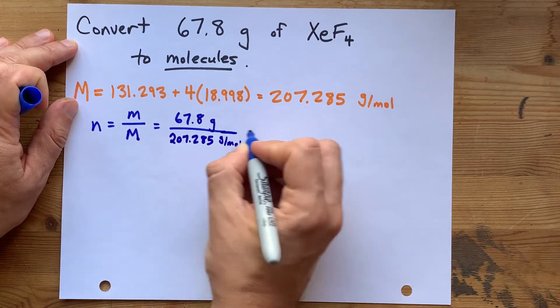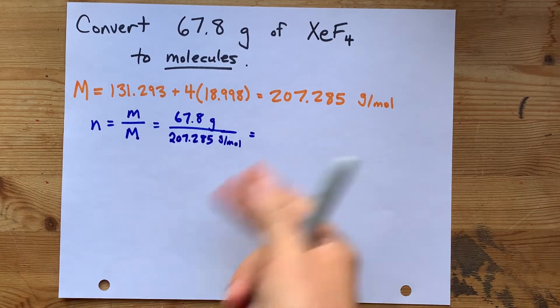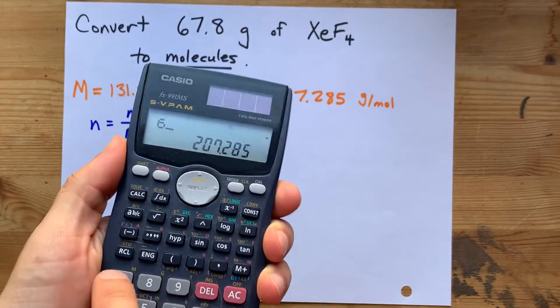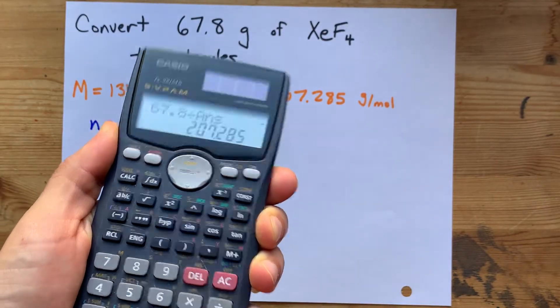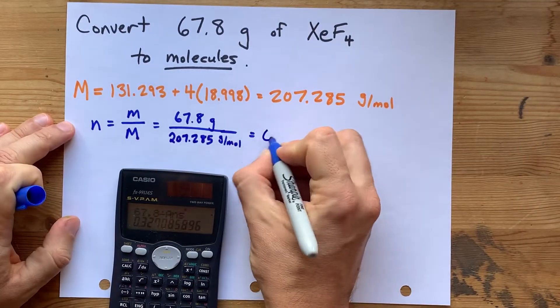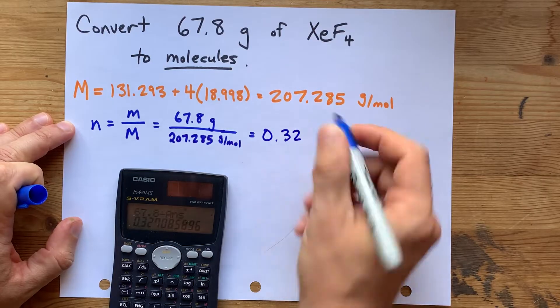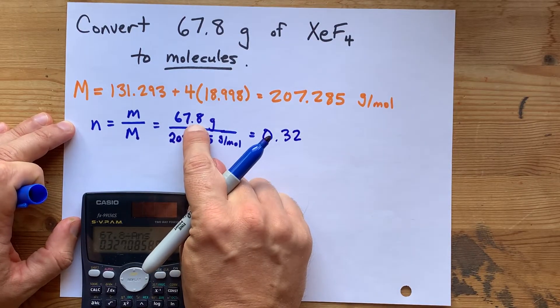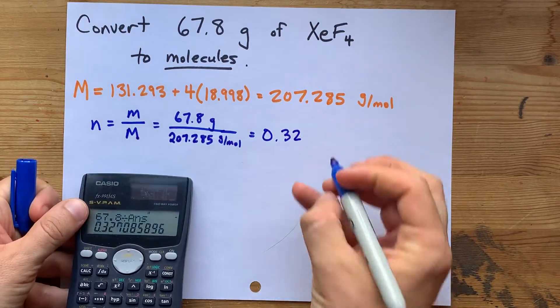Now, I'm also writing my units in case your teacher asks for that, but it's the division here that truly matters. 67.8 divided by that answer. That's 0.327. Now, I'm going to keep a couple extra decimal places here. I'm going to round at the very end, but 1, 2, 3 significant figures mean 3 significant figures for the final answer once I get there.